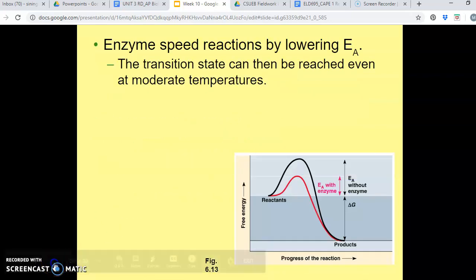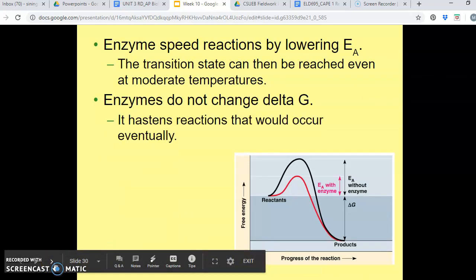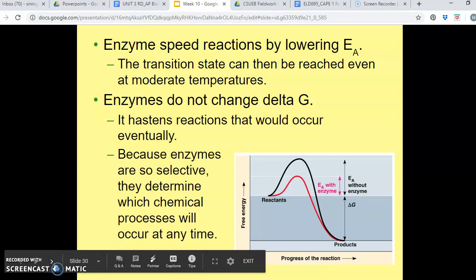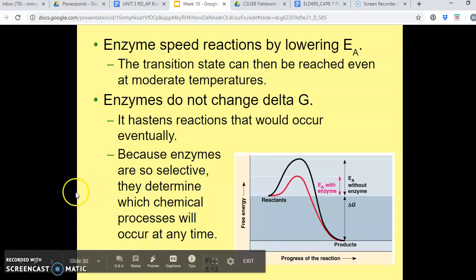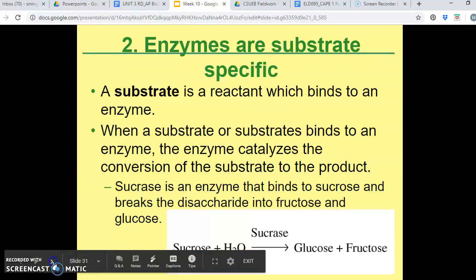So enzymes speed up reactions by lowering the activation energy, and we will go into more detail about how the enzymes lower the activation energy later on in this lecture. And enzymes don't change the delta G, or don't change the free energy of the reaction.